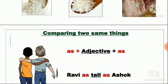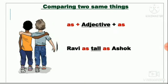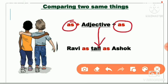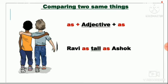When we compare two things that are equal, we use the 'as...as' structure. Jab hum do equal cheezo ko compare karte hai — pehle ek as add karenge, beech mein adjective aayega, and then finally another as. For example: Ravi is as tall as Ashok. As thin as. As — adjective — as.